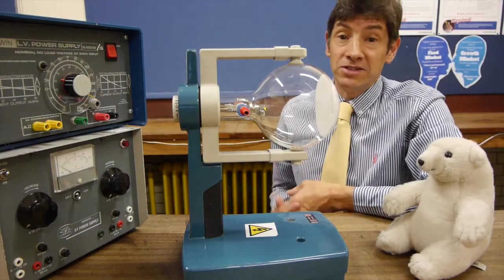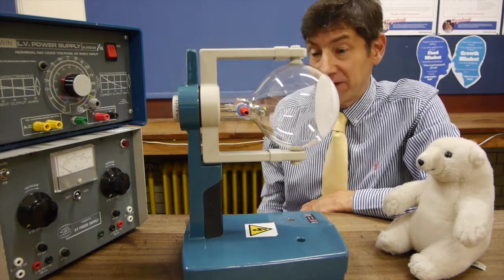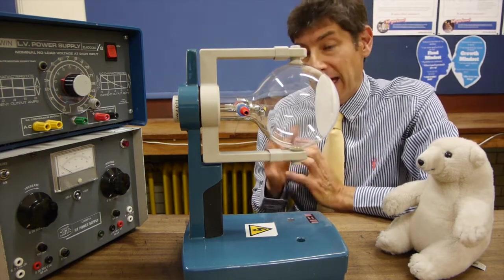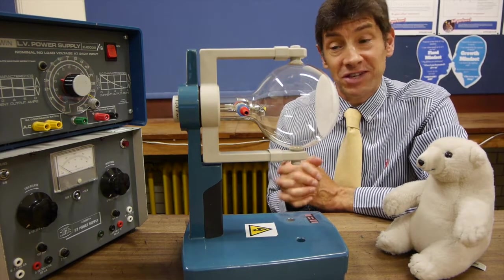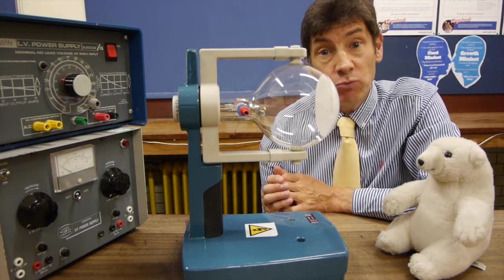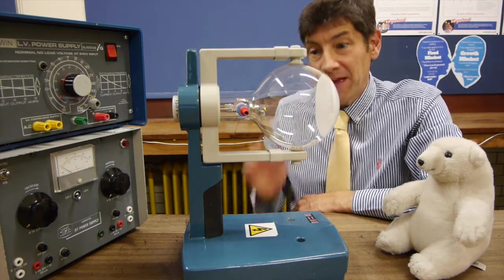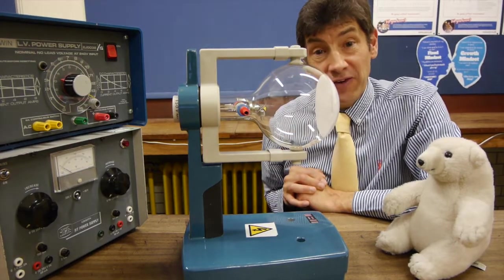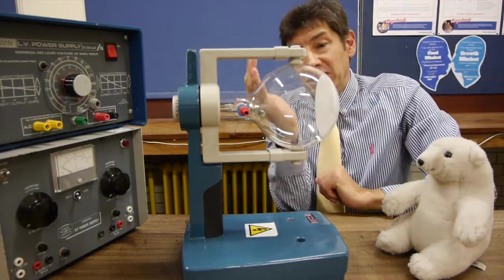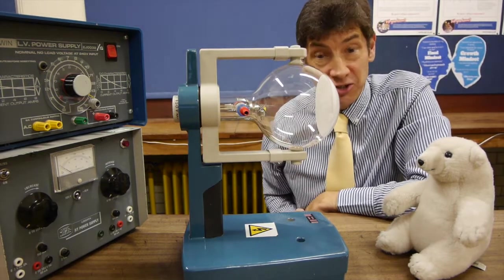So to do this experiment, what we need to do is swing an electron into a circular motion. I've got my Teltron tube here, and it's slightly different from the ones you might have seen earlier in my videos. This one has two electron guns, but the gun we're going to use is one that points vertically upwards. What we're going to do is deflect that beam with a magnetic field going through the tube into a circular motion around the inside of the tube.